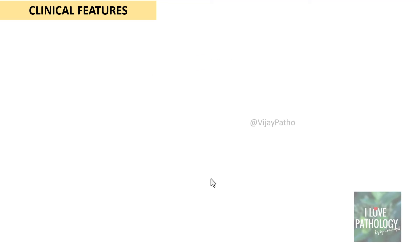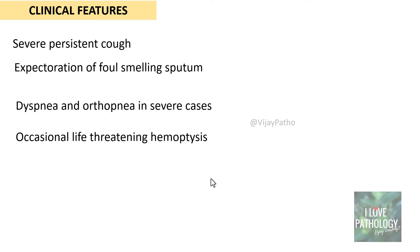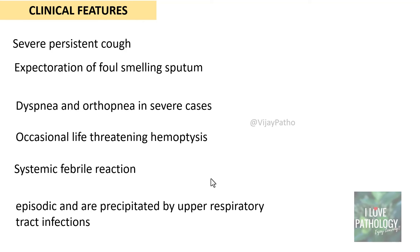How do these patients manifest? The most common presentation is severe persistent cough with expectoration of a foul-smelling, copious amount of sputum. Dyspnea and orthopnea are seen in severe cases. Occasionally there could be life-threatening hemoptysis, as adjacent blood vessels can also be destroyed and give access to the bronchi. Because of long-standing persistent infection, these patients almost always have fever and systemic febrile reaction. Manifestations are often episodic and precipitated by upper respiratory tract infections.